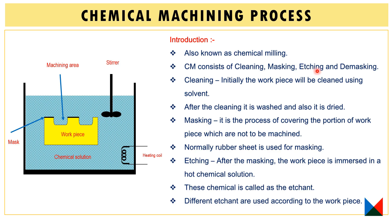After masking, etching is carried out. In the etching process, unwanted material is removed from the workpiece. The workpiece is placed in a hot chemical solution — the solution is very hot because of the heating coil, which uses electricity to provide heat. When the workpiece is immersed in the chemical solution, erosion is carried out in the workpiece.